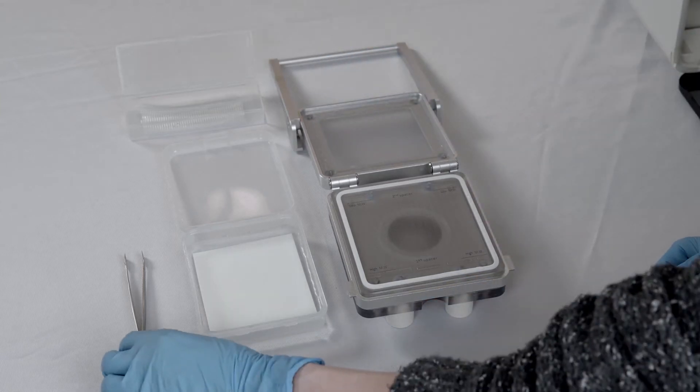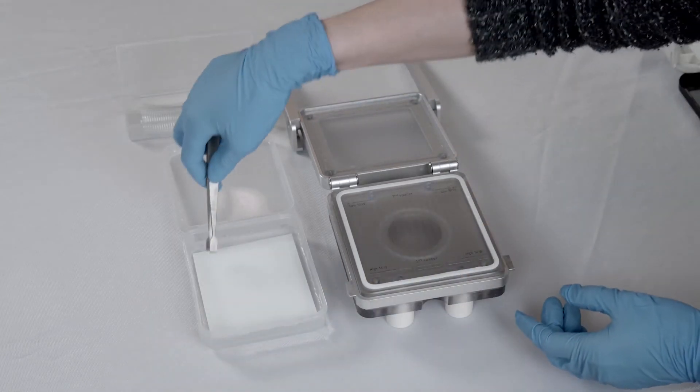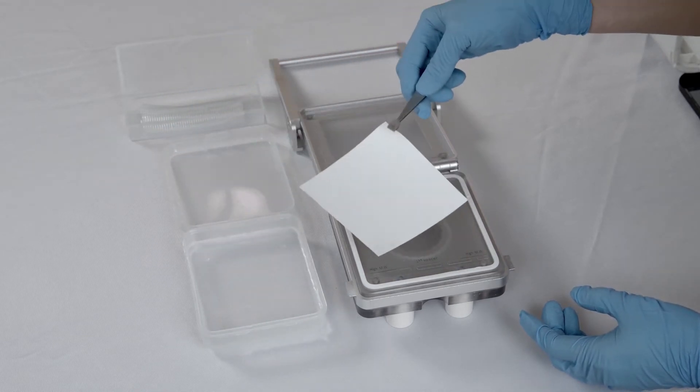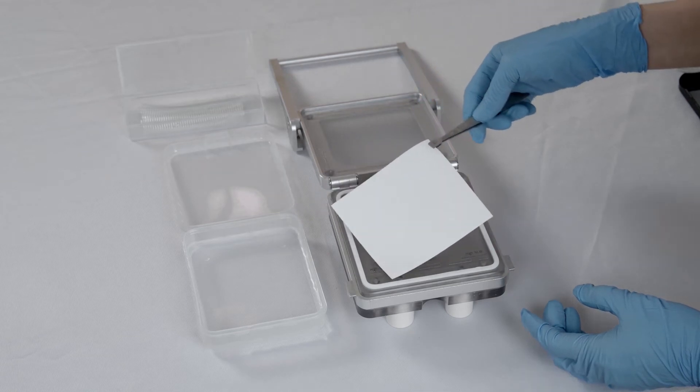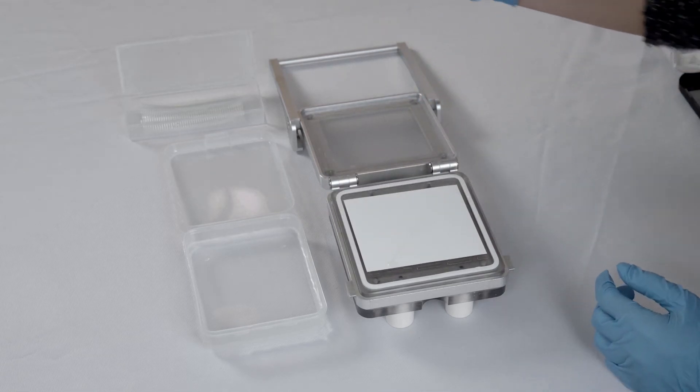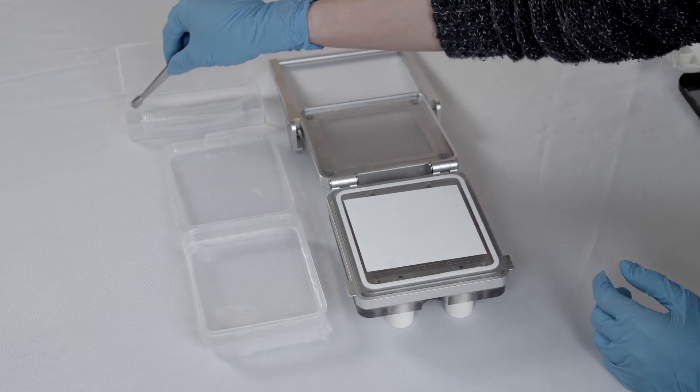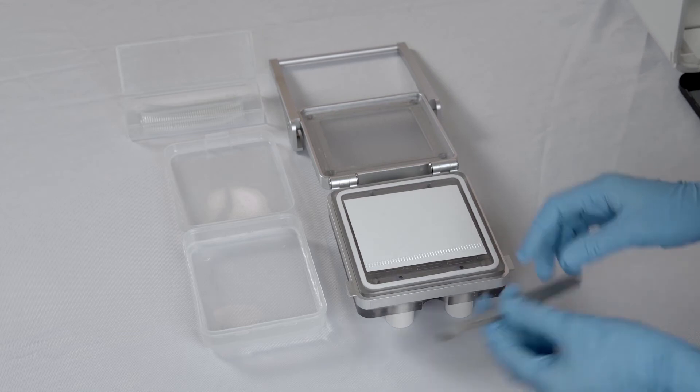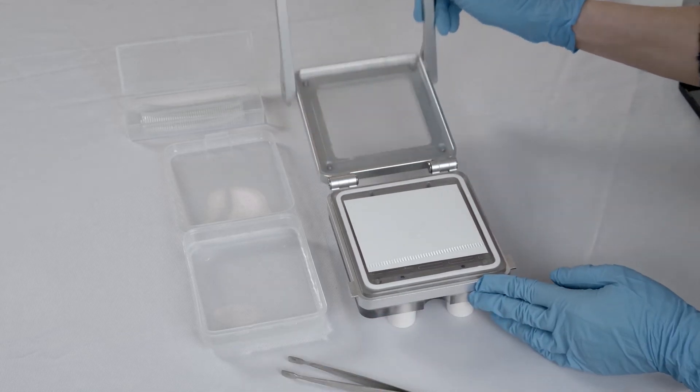Align the membrane with bands facing up on the cassette in the orientation corresponding to the markings, noting the position for high molecular weight and low molecular weight protein bands. Then place the spacer on top of the membrane, close the cassette, and insert it back to the instrument.